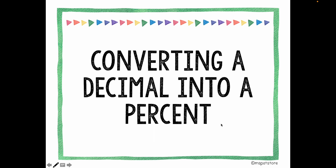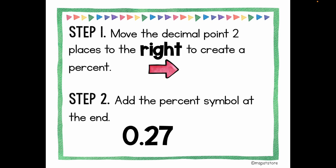Now I'm going to show you how to convert a decimal into a percent. Basically, this is the reverse of what we were doing before. Step one: move the decimal point two places to the right to create a percent. Step two: add the percent symbol at the end. So for 0.27, I move the decimal point to the right: one and two. That means I have 27 percent. That's all you need to do to rewrite it as a percent.